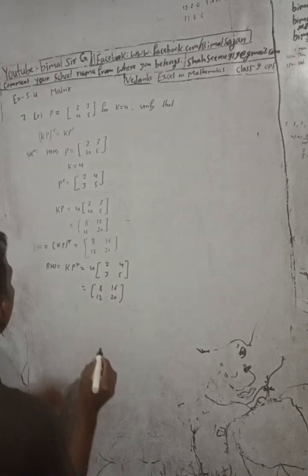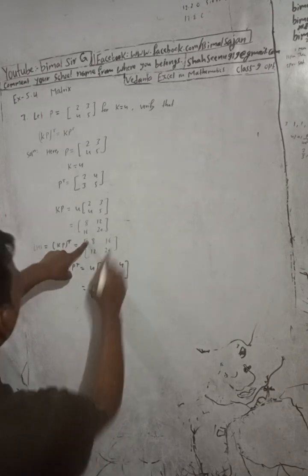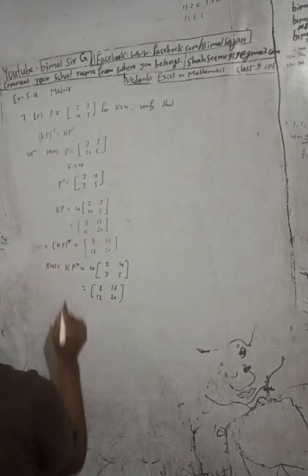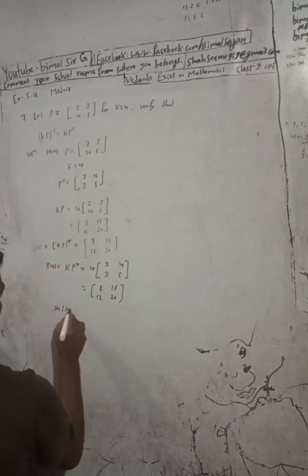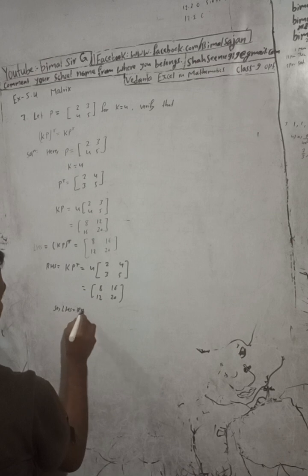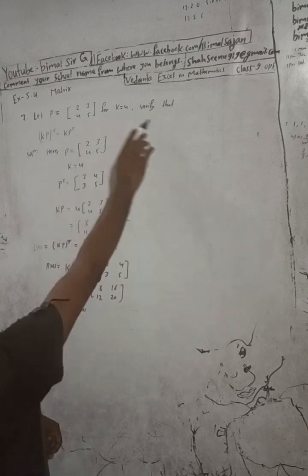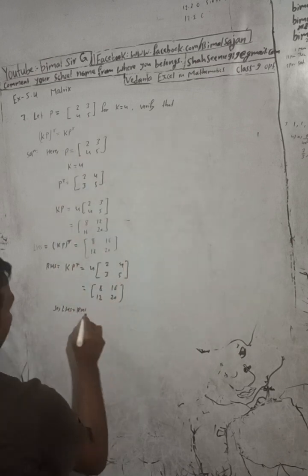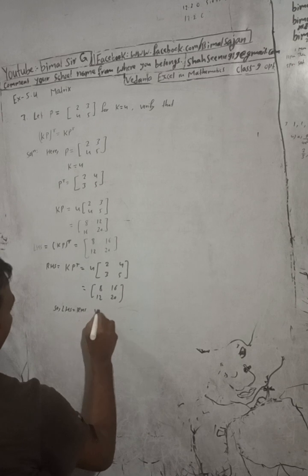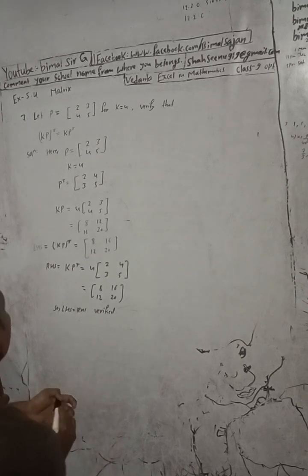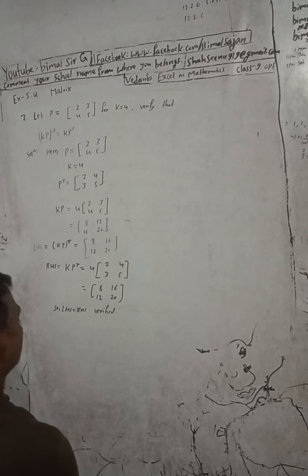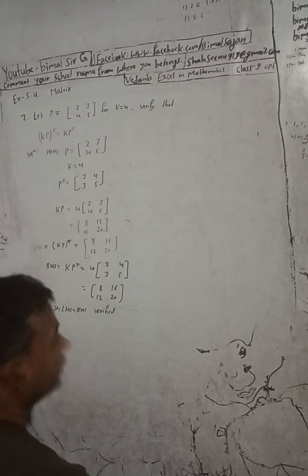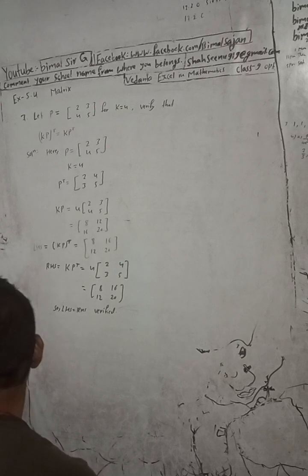We can see LHS is equal to [8, 16; 12, 20] which equals RHS. Therefore LHS is equal to RHS — hence verified. This is the solution of question number 7.